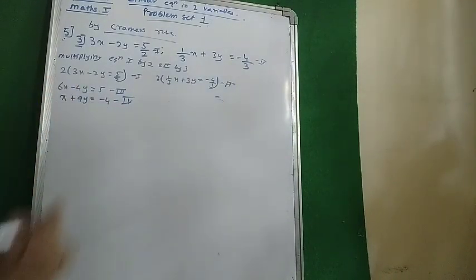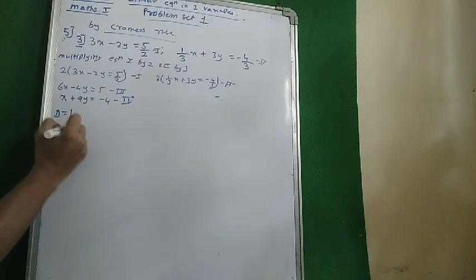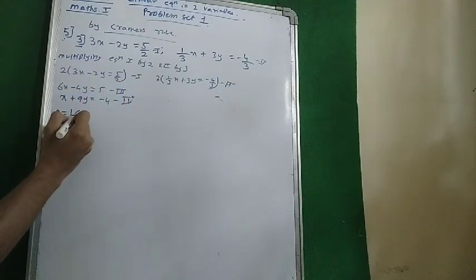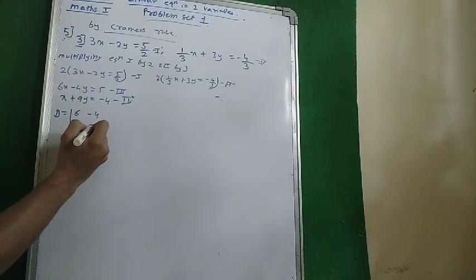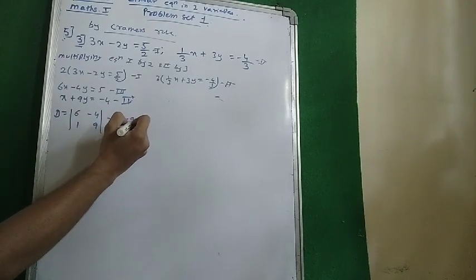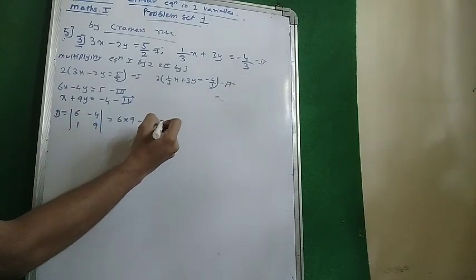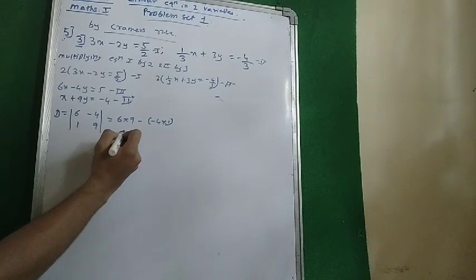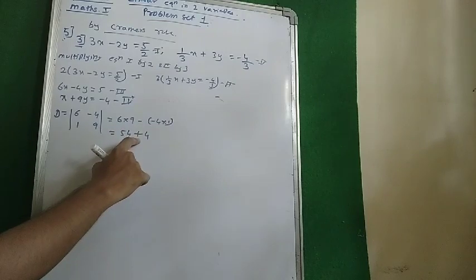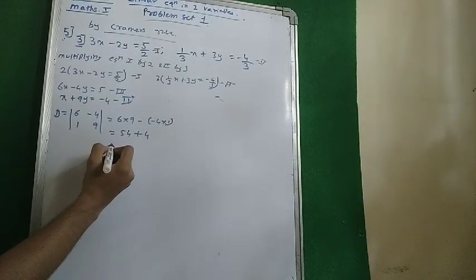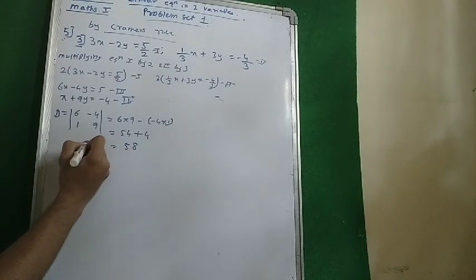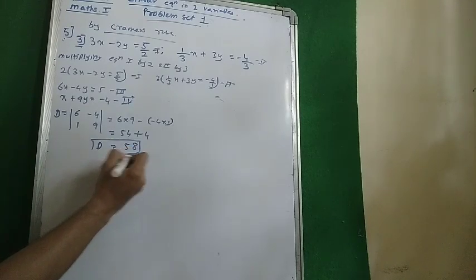Now we need to solve this equation by Cramer's rule. I will find out the value of D first. D is equal to the coefficient determinant — we are not including the constant part. So D is the determinant with entries 6, 1, minus 4, 9. That gives 6 nines are 54, minus (minus 4 into 1). Minus minus becomes plus, so it is plus 4. So 54 plus 4 is 58. That is the value of D.